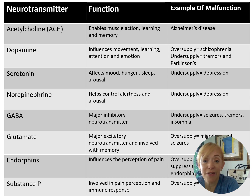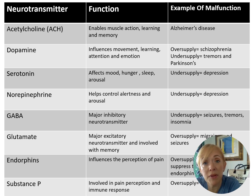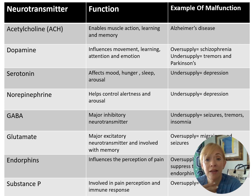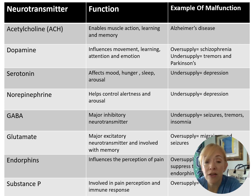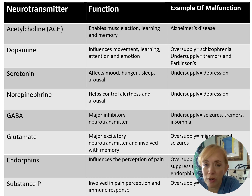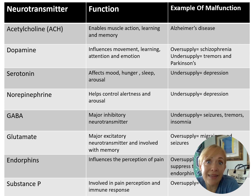There are eight neurotransmitters you have to know well. ACh — acetylcholine — think 'A for Alzheimer's': an undersupply can lead to Alzheimer's. Dopamine is involved with learning and attention: too much dopamine is linked to schizophrenia, too little to Parkinson's disease and tremors. Serotonin is your mood elevator — too little can lead to depression, which is why SSRIs target it.